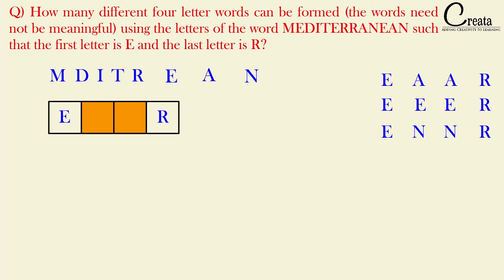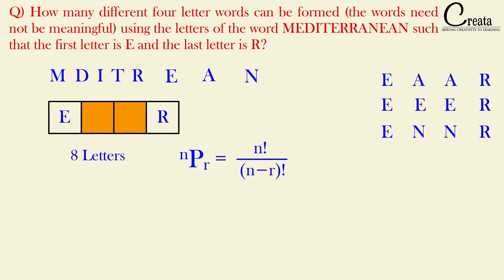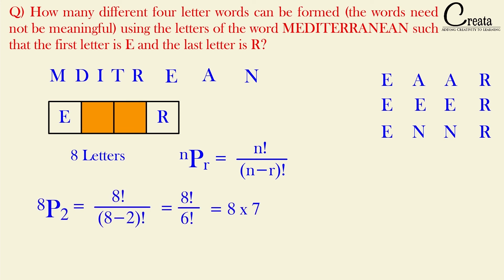To avoid overlapping, we treat the two E's as a single E, the two A's as a single A, and the two N's as a single N. Combined with the single letters M, D, I, T, and R, this gives us a total of eight distinct letters. With eight letters and two slots, we apply nPr: 8 × 7 = 56 arrangements.